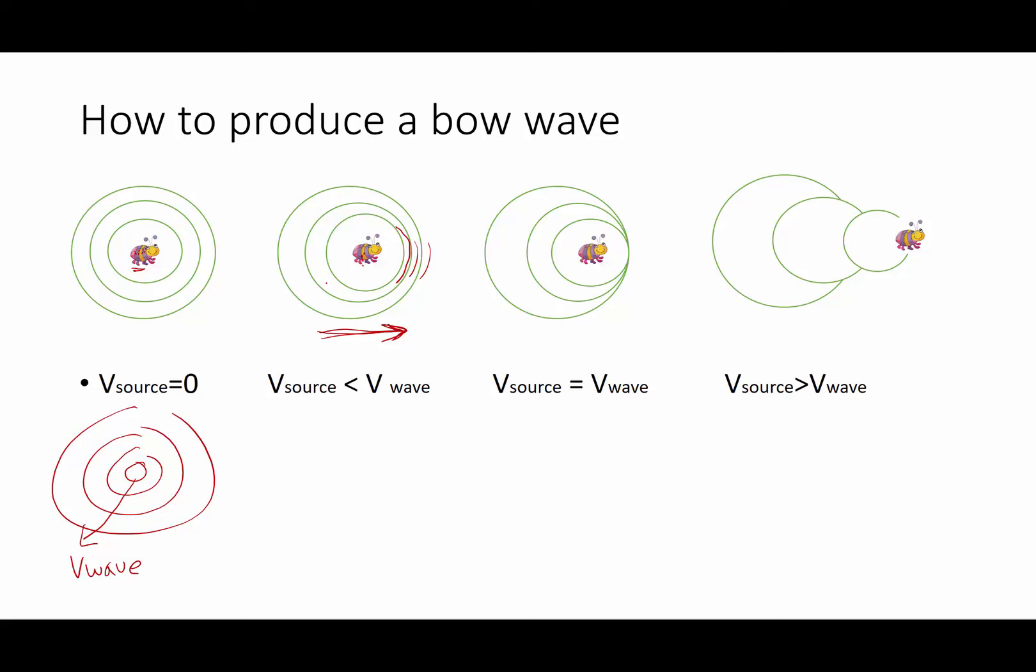So the velocity of the source is a little bit slower than the velocity of the wave. Now if my bug, as he's hopping up and down to make waves, starts getting a little faster, if the velocity of the wave source, my little hopping bug, exactly equals the velocity of the wave in the material, then it's going to have this nice thick position right in the front of that bug. And that is going to produce a big compression wave right in front of him.